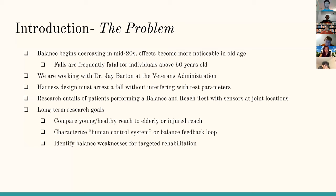Without blocking the motion capture sensors they're using to model body motion, they can compare young and healthy reach to elderly or injured reach, and characterize what he described as a human control system, which is the sensory feedback loop, so they can identify balance weaknesses in individuals for targeted rehabilitation.